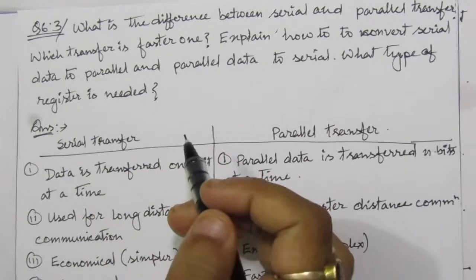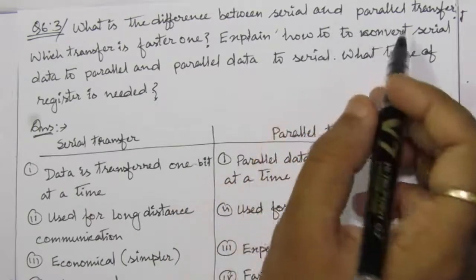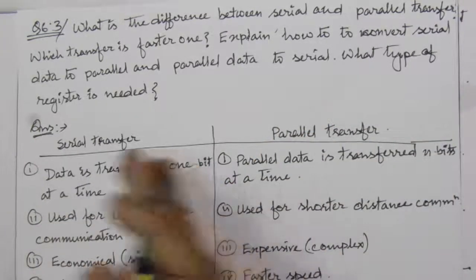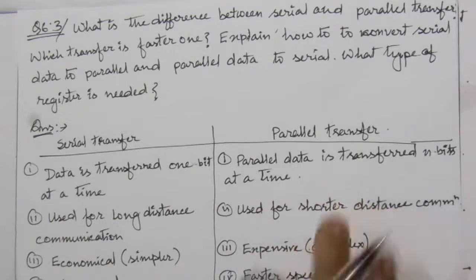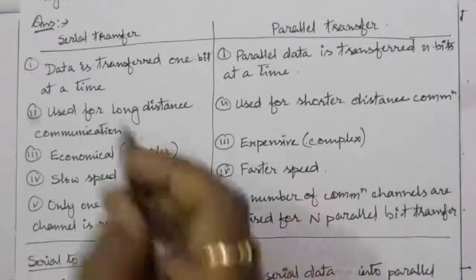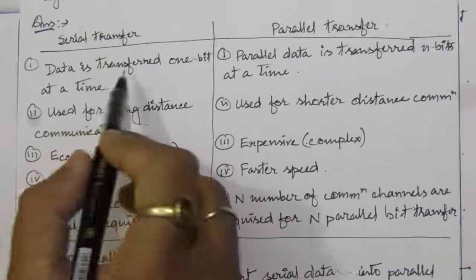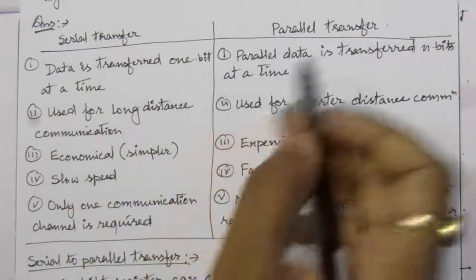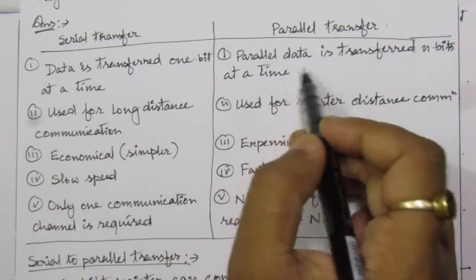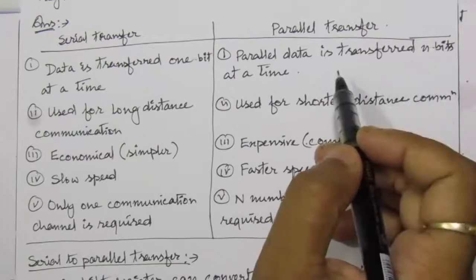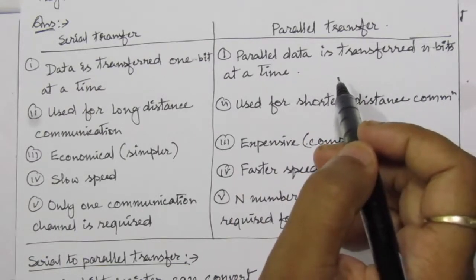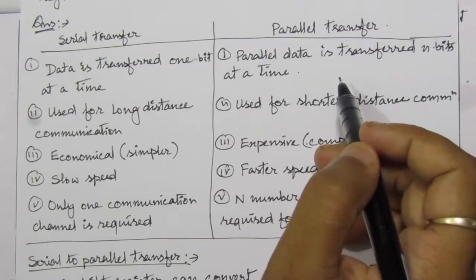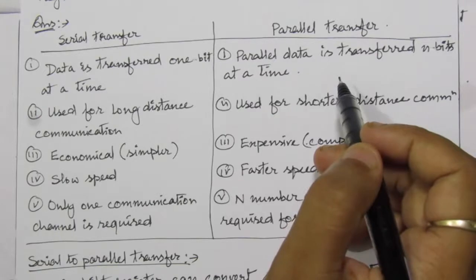First, let us see the difference between serial and parallel transfer. On the left-hand side I have written serial transfer, and on the right-hand side, this is parallel transfer. The first difference is: in serial transfer, data is transferred one bit at a time. In parallel transfer, n bits are transferred at a time — there are n inputs and n outputs, so with each clock cycle, n bits are transferred from input to output.